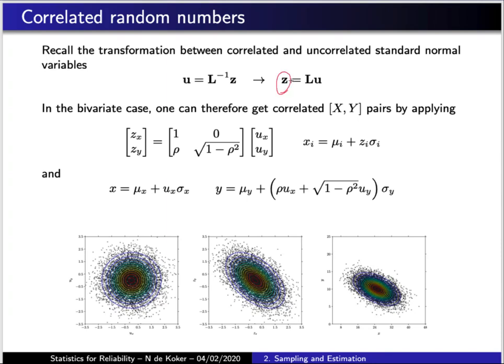So once you have the correlated standard normal vector the next step is to transform it to real coordinates which is to say go from Z to X. Now if your random variables in real space are also normally distributed that transformation is straightforward to perform using the standardization equation. So in the bivariate normal case this entire process can be summarized into this set of equations where a given pair of uncorrelated standard normal values transform to correlated standard normal values by the terms in the Cholesky matrix and from that you can then calculate the corresponding X and Y values.